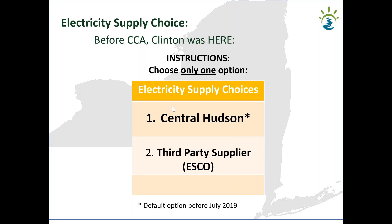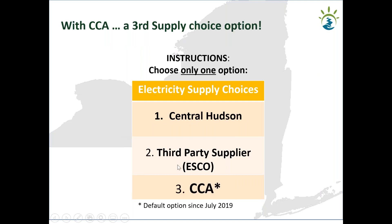Central Hudson only delivers electricity to your home — they maintain the power lines and make sure you always have power. Their default was to search the market and find the best prices available, but that energy was not clean or renewable — it's generally mostly fossil and nuclear. Folks who wanted a different option could choose a third-party supplier, known as an ESCO. Common ones include Green Mountain Energy. The only two reasons people would choose an ESCO are a better price or to support renewable energy on the New York State grid.